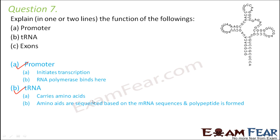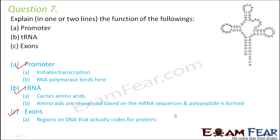Exons are those regions of DNA which actually code for proteins. There are two parts of DNA: exons and introns. Introns are like interference between exons and do not code for proteins, but exons actually code for proteins and are thus extremely important. With this we have reached the end of this lesson, which covered the important concepts of replication, transcription, and translation.